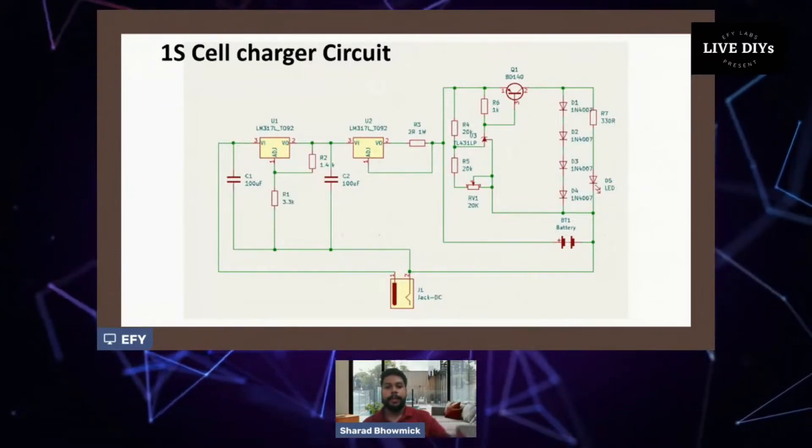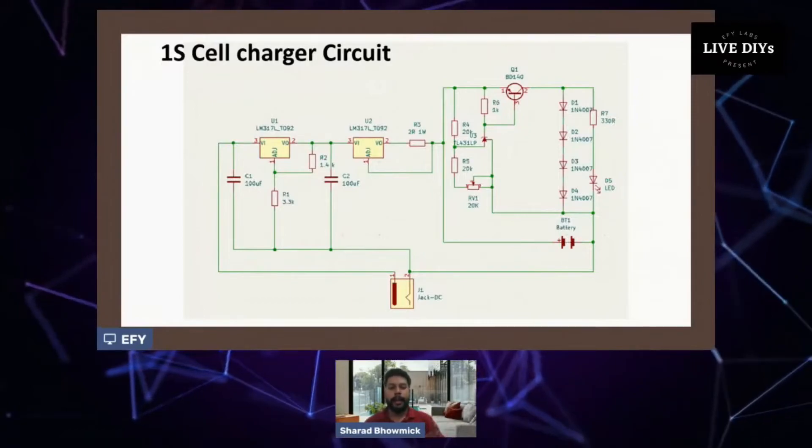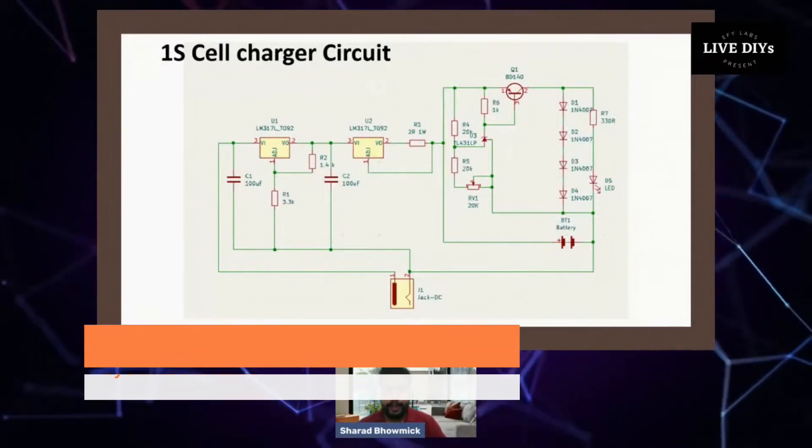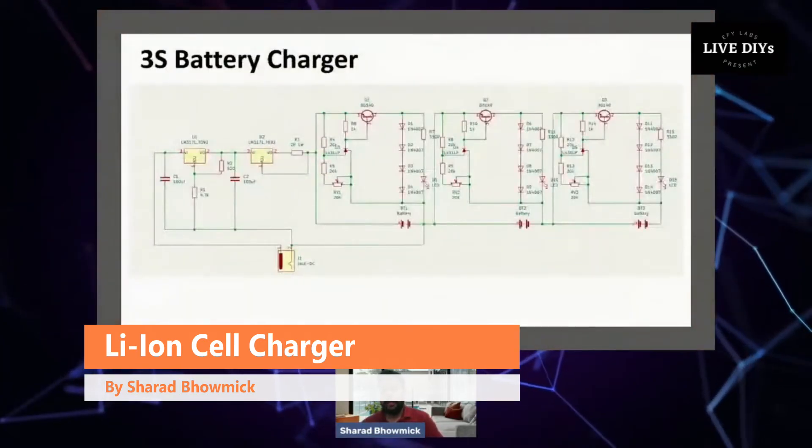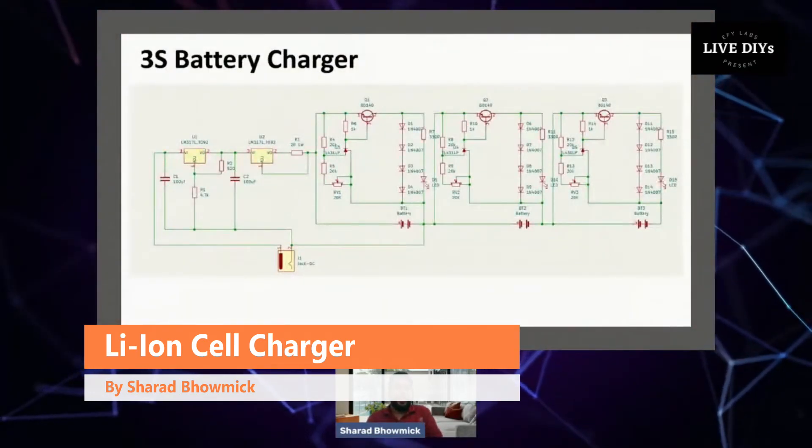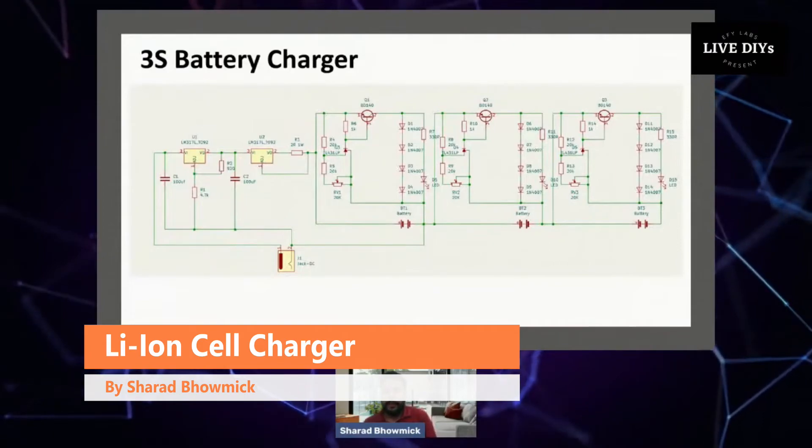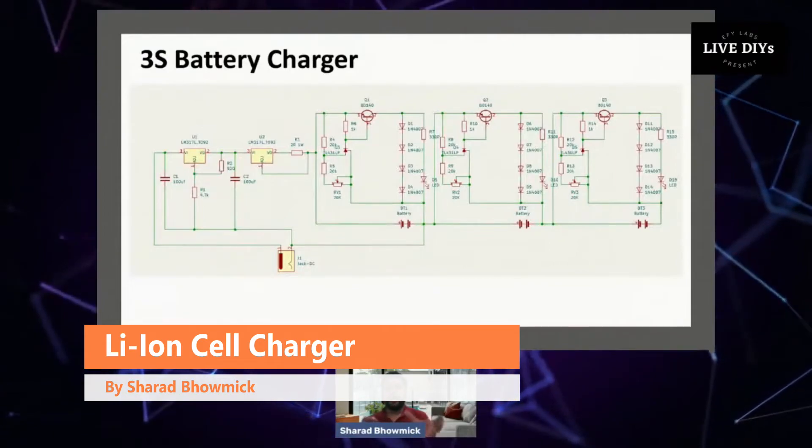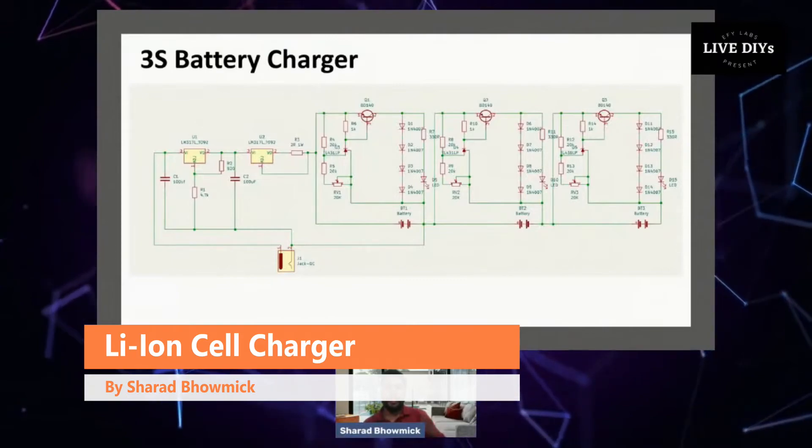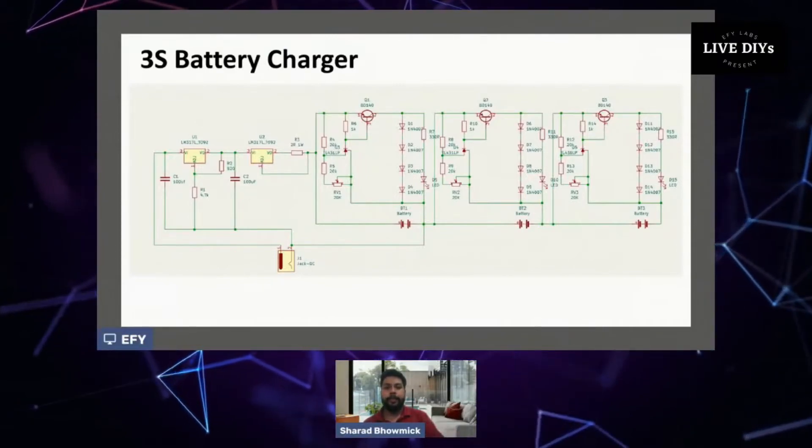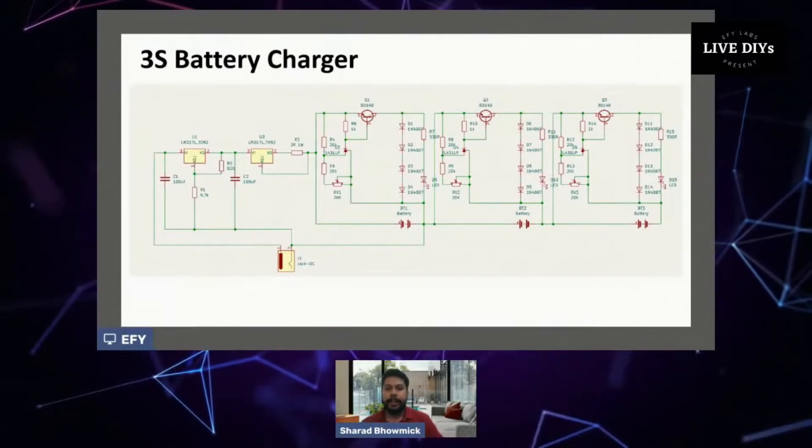We can set the threshold by changing R3. The third part is basically our balancing and charging circuit. This is our circuit. One of the most important and best parts about this circuit is that we can use the charging and balancing part and copy and mirror that same thing multiple times to achieve 2S charger, 3S charger, 4S charger, whatever we want.